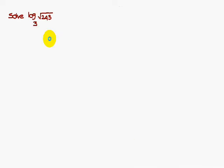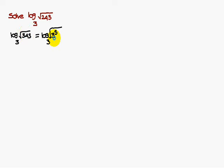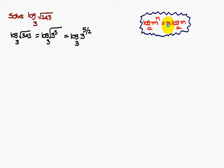Now we will solve some problems. First: log of square root of 243, base 3. The base is 3, so write 243 as 3 to the power 5. Square root means power 1/2, so this becomes log of 3 to the power 5/2, base 3. Using the formula log M^N base a = N log M base a, this gives 5/2 times log 3 base 3. Since log 3 base 3 equals 1, the answer is 5/2.